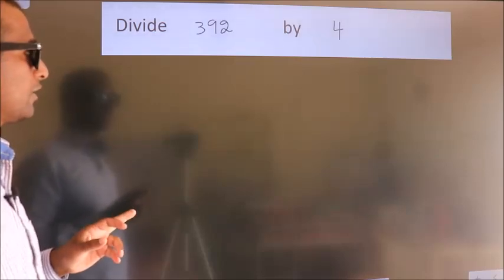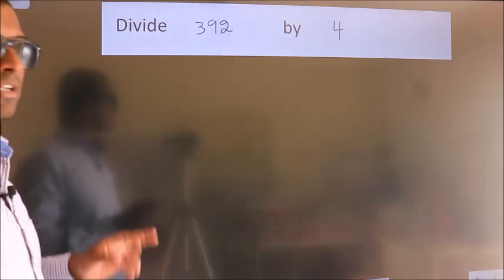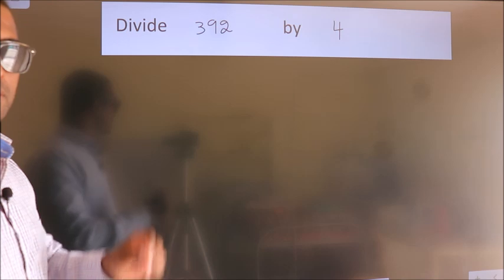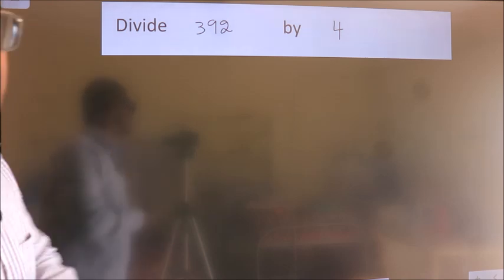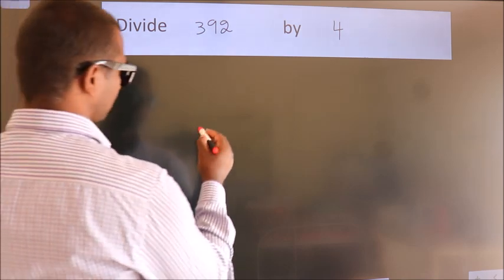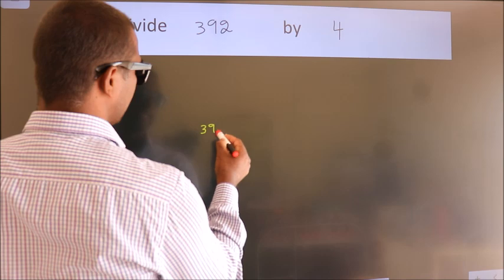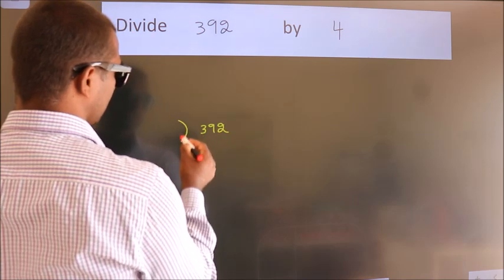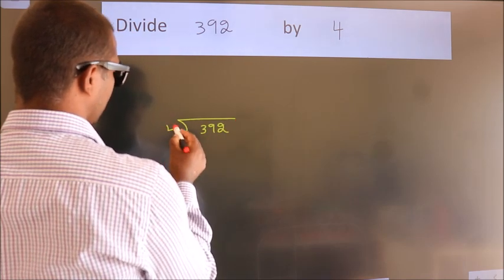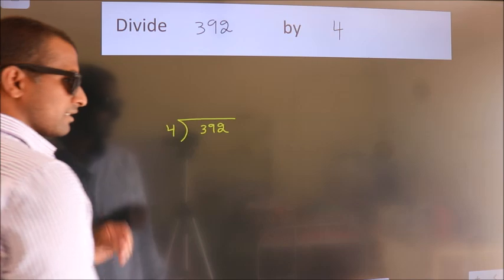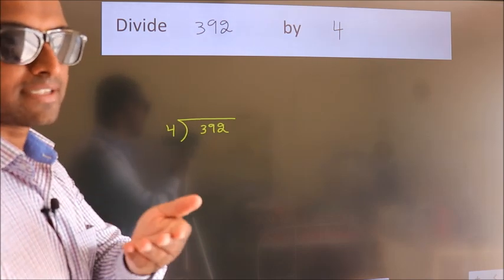Divide 392 by 4. To do this division we should frame it in this way. 392 here, 4 here. This is your step 1. Next.